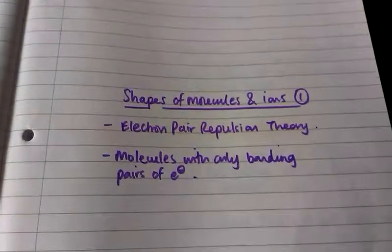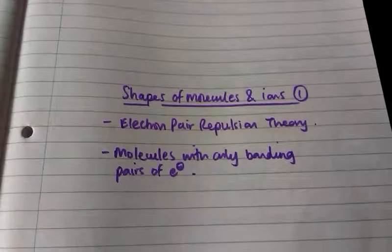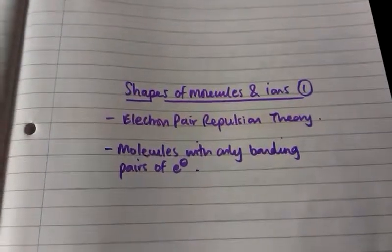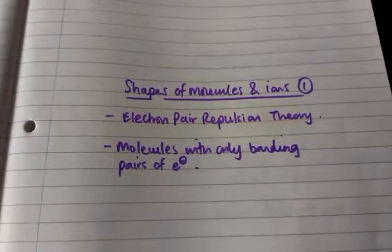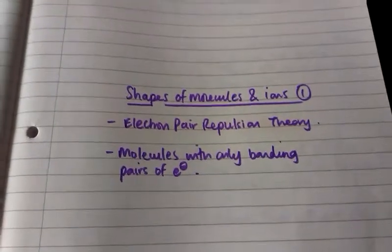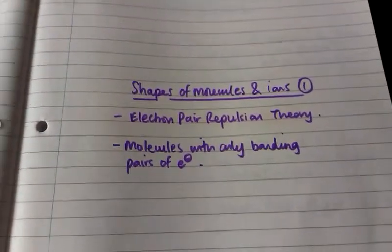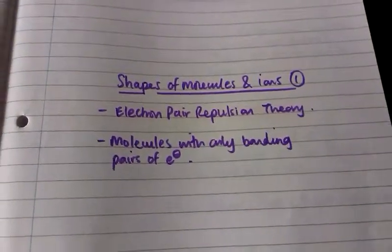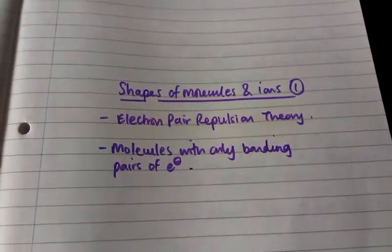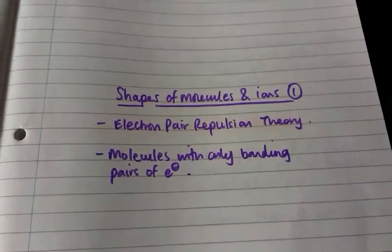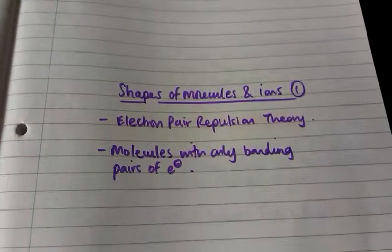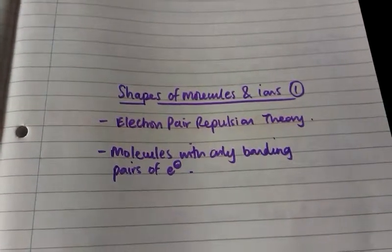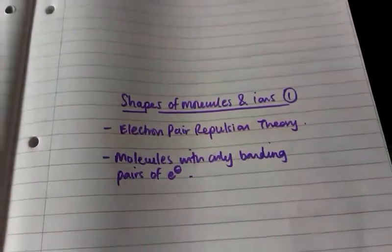This is the first video on shapes of molecules and ions where I'm going to go through electron pair repulsion theory and then show you how to determine the shapes of molecules where only bonding pairs of electrons are present.